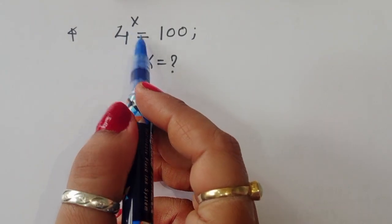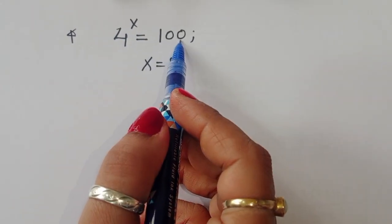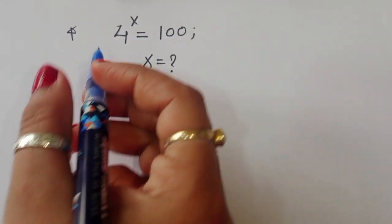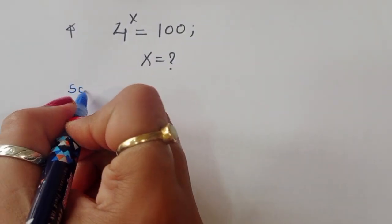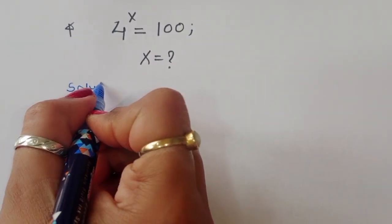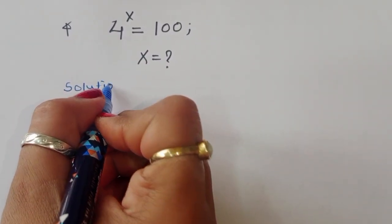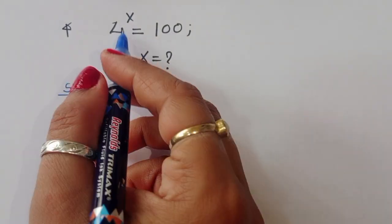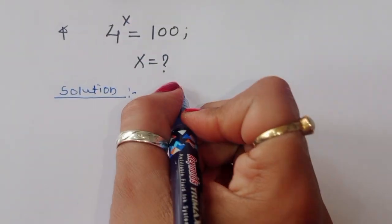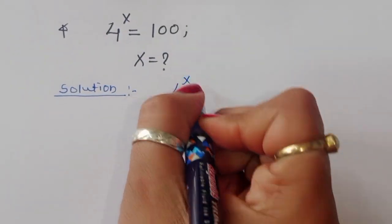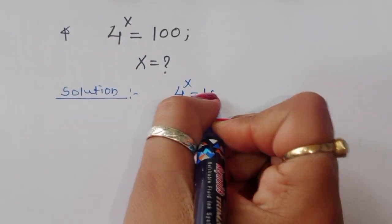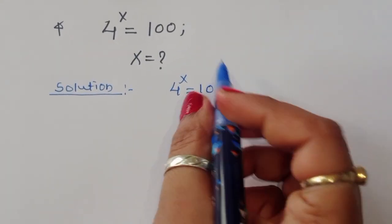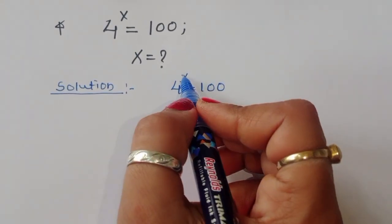The question is: given 4 power x is equal to 100, we have to find out the value of x. Let's see the solution. 4 power x is equal to 100 — this is the question and we have to find out the value of x.